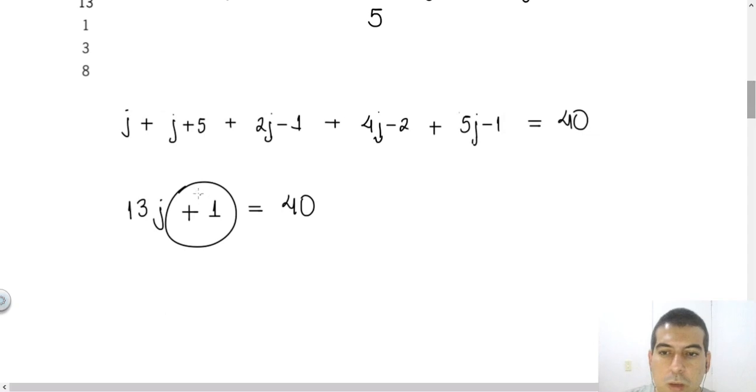Equal 40. This plus 1 I will send to the right side, it will change the sign of the number, so it will be 40 minus 1. I will put just the result, 40 minus 1 will be 39. This 13 I will send to the right side of the equation. Once it's multiplying the j, it will divide on the right side. So let j, let the variable alone.